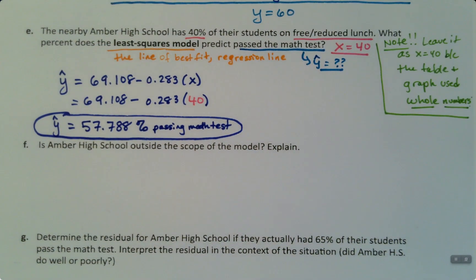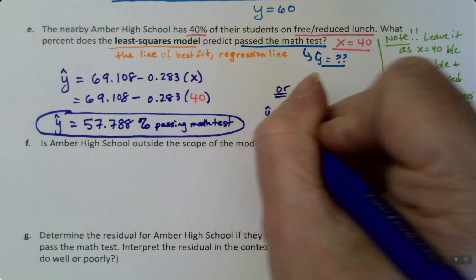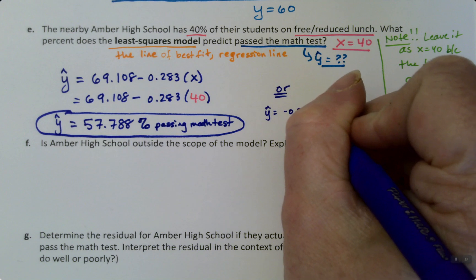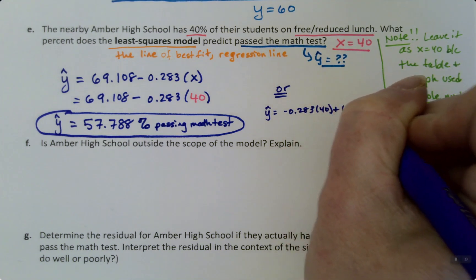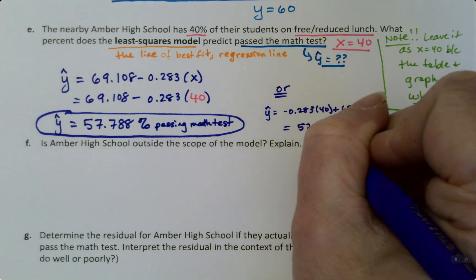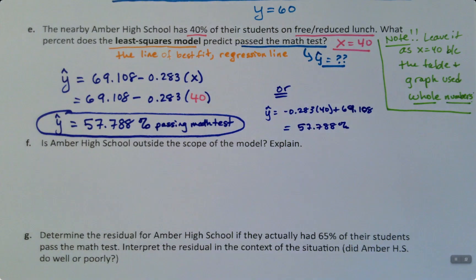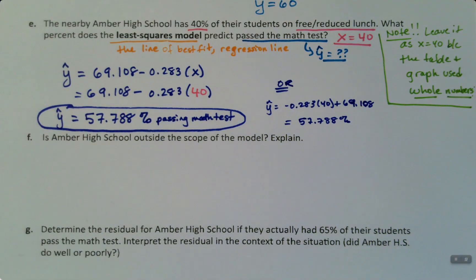Again, if anybody wants to, I can just write real quickly. If you want to write it the other way, it would be negative 0.283 times 40 plus 69.108. It gets you the same answer, so it doesn't make any difference. So that's just an or. You don't have to write it. You don't have to do it that way. It's no big deal.